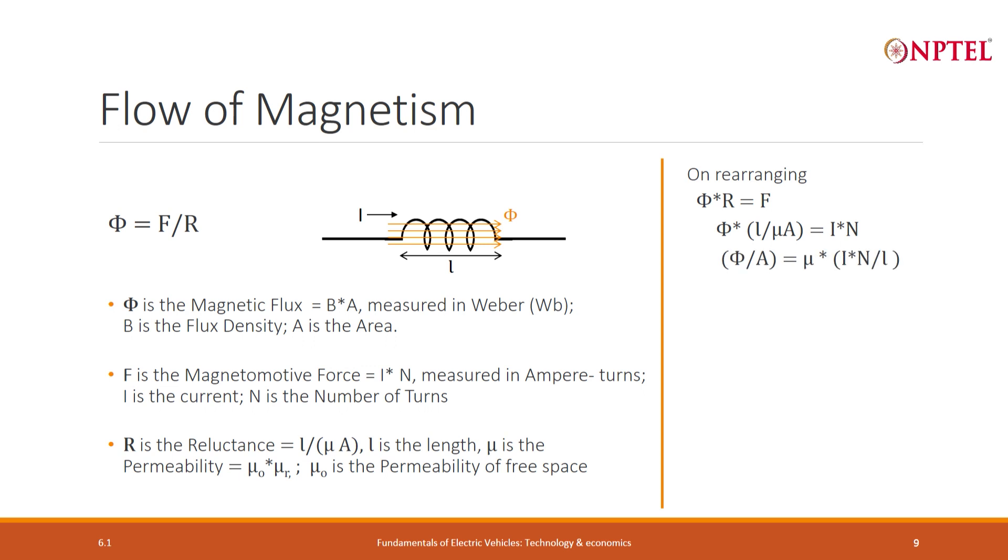Then I get, like current density, this is the flux density whose units are Weber. No, the flux is in Weber. This flux density is measured in Weber per meter square. There is a separate term for it, it is called Tesla. Weber per meter square is Tesla, and this is ampere turns per meter. F is measured in ampere turns because it is I into N, and this entity that we have by dividing it with L is called the ampere turns per meter, and that is called the field strength.